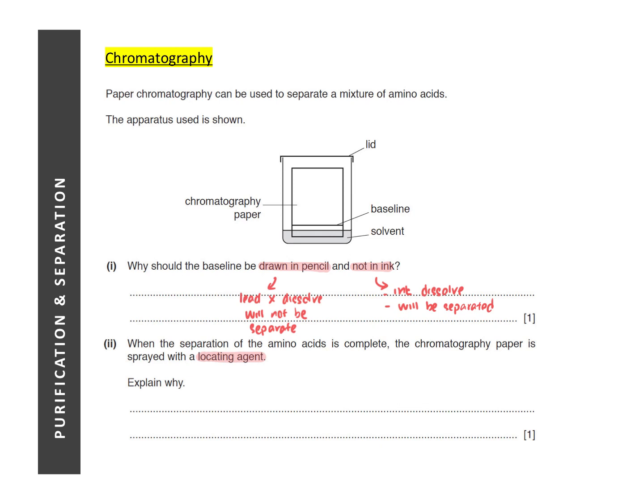Next, another common term associated with chromatography is that of a locating agent because not all mixtures are colored. So sometimes we need to analyze colorless ones, the very famous one would be your amino acids. So in order to identify your colorless substances, we need to use something called a locating agent. So whenever you see the term locating agent, it means that the substances in the mixture are colorless. So we need to apply a locating agent in order to identify the location of the spots.